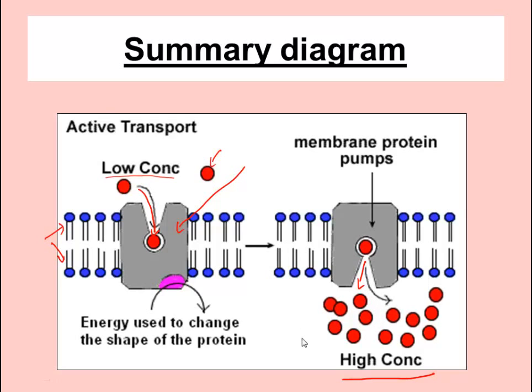For IGCSE, all you really need to remember is: energy is required, carrier proteins are involved, there is a change of shape, and transport goes uphill against the concentration gradient. Also important — carrier proteins are specific, just as enzymes are specific with their active site and only bind to one particular substrate. The binding site of a carrier protein will only bind to a specific molecule. So a carrier protein for Mg2+ will not be able to pick up nitrates, NO3-.